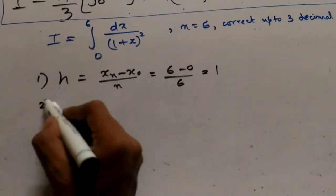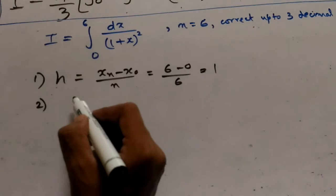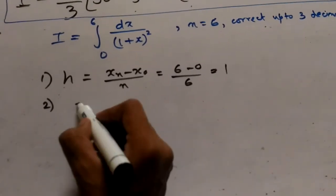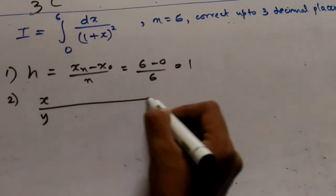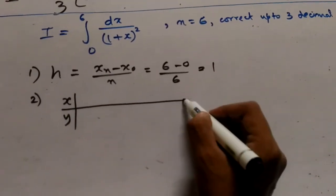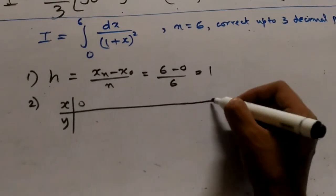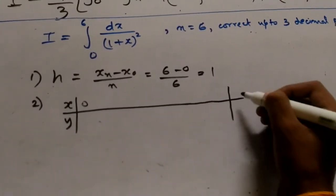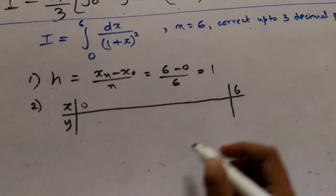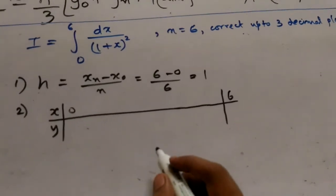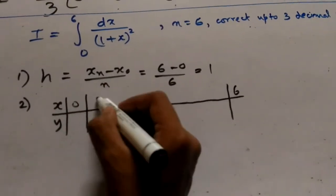Now step 2, we need to create or construct the table. So x and y. Now x0 is 0 and last xn is 6. Now x1 is 0 plus 1, that is again 1.